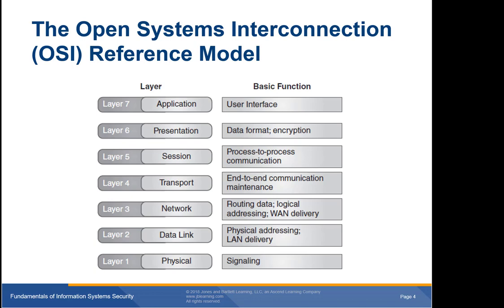Next is the data link layer, responsible for transmitting information on computers connected to the same local area network or LAN. The data link layer uses media access control or MAC addresses, and device manufacturers assign each hardware device a unique MAC address. Finally, the physical layer is responsible for the physical operation of the network, translating binary 1s and 0s into electrical pulses for copper cables or bursts of light for fiber optics.